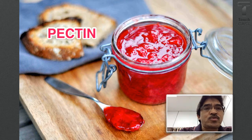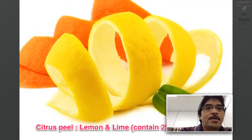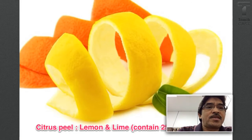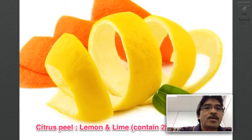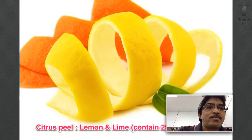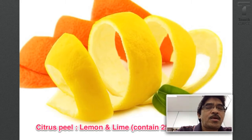In this presentation I would like to talk about the source or the raw material from which we can get pectin. Pectin is actually extracted from plant material, and commercially and industrially, we can extract pectin from citrus peel. This is one of the major sources, because citrus peel like lemon and lime contain quite a substantial amount of pectin — about 25 to 30 percent pectin.